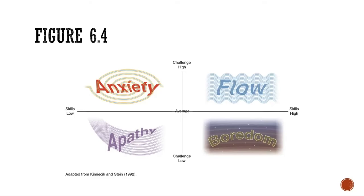For an athlete to achieve flow, there needs to be a match between the challenge of the task — which could be the opponent or the level of training — and the athlete's own skill level. As we saw in the video, high-performance extreme sport athletes have high skill and face high challenges, like free climbing. They are probably the ones who experience flow most often because they are constantly challenging themselves and doing something very few people can do.